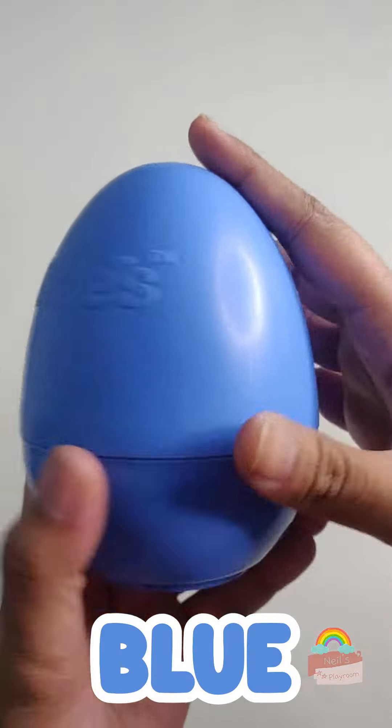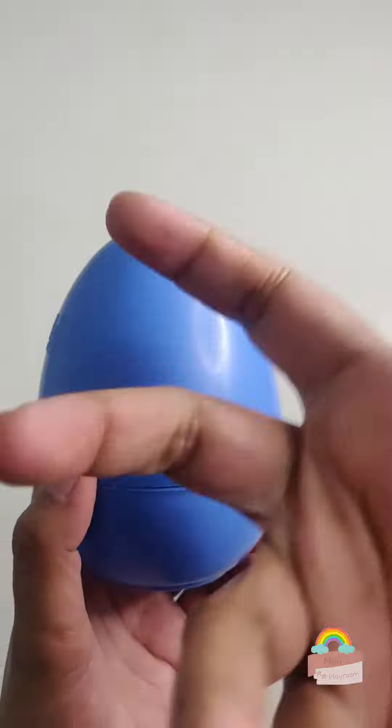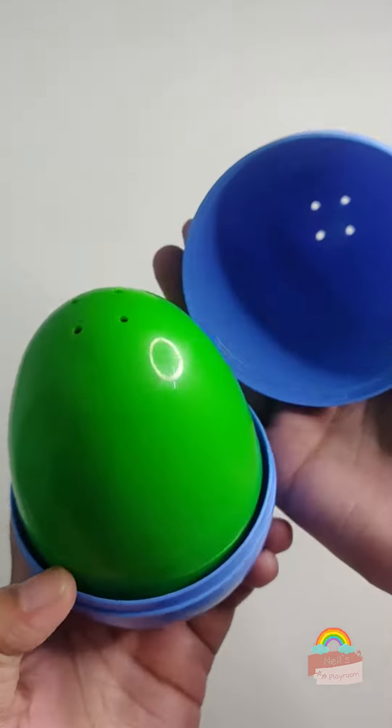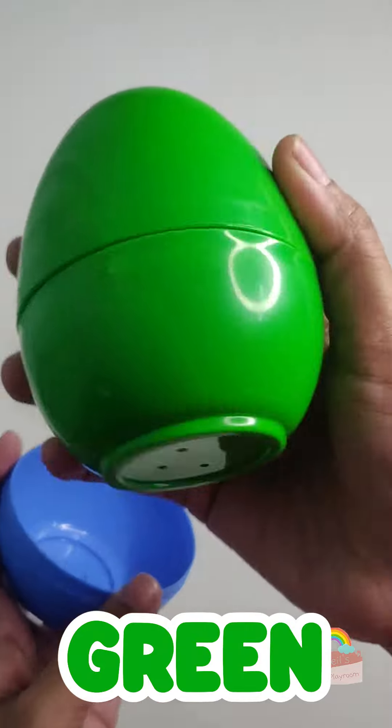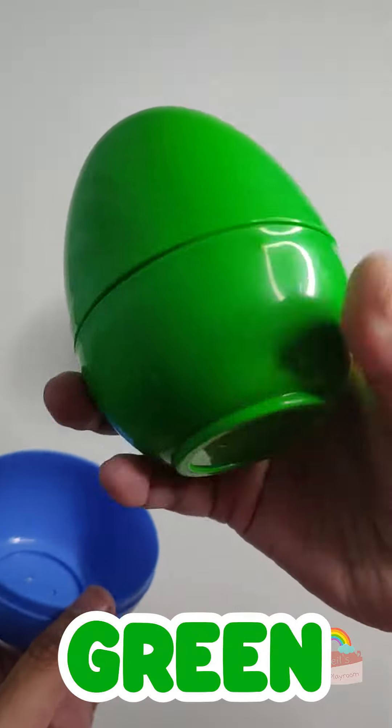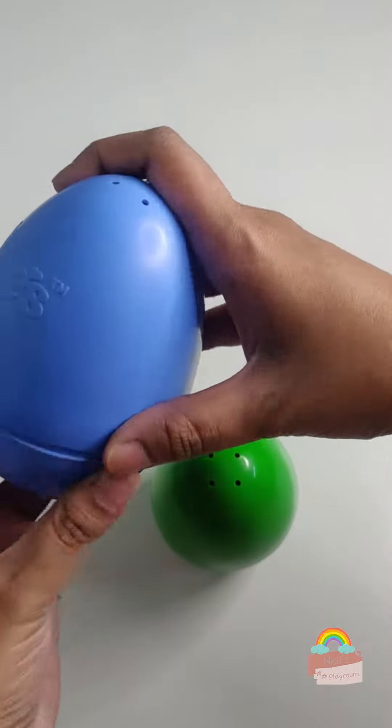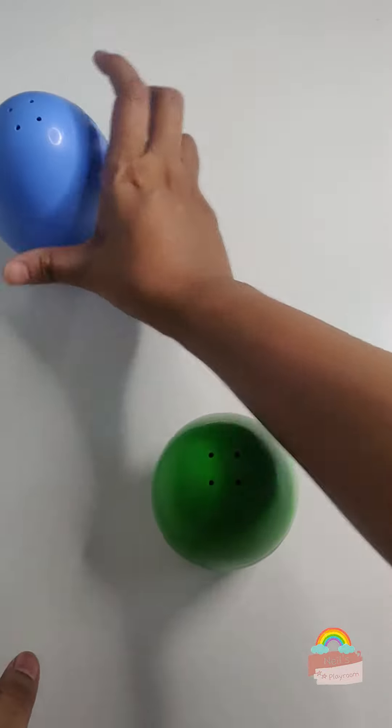Let's find out. Knock knock. Who's there? Oh wow. A green colored egg. We have two eggs now. One blue egg and one green egg.